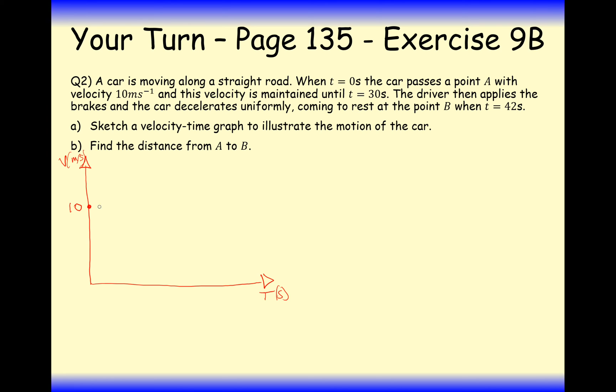This velocity is maintained for 30 seconds, so 30 seconds here. The driver then applies the brakes, and the car uniformly decelerates, coming to a rest at point B after 42 seconds. So 42 seconds appears here, so that's 12 seconds that they decelerated for. Sketch the velocity time graph here. Done.